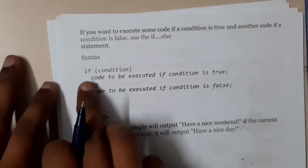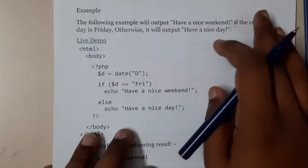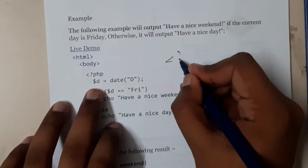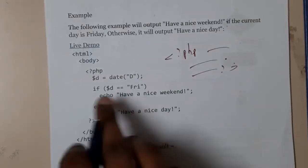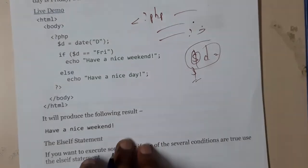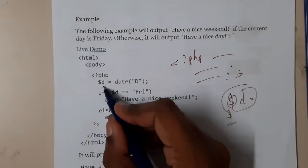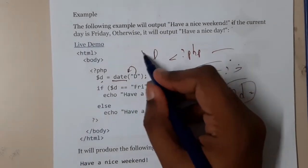The syntax is: if a condition is true it will execute, else the other block executes. Remember that in PHP, we write code between the PHP tags. Variables are always written with the dollar symbol — the dollar symbol tells the server that this is a variable. Here, $d is a variable in which you are storing a date.